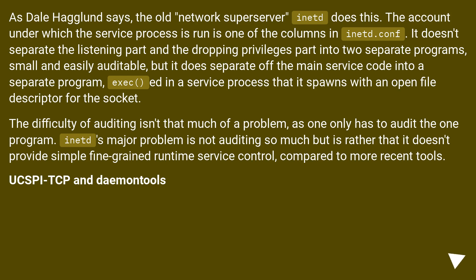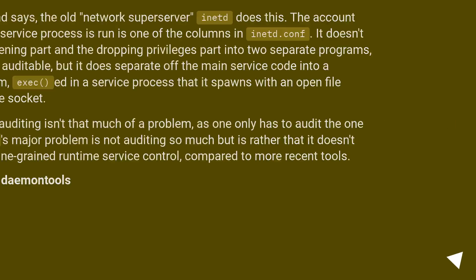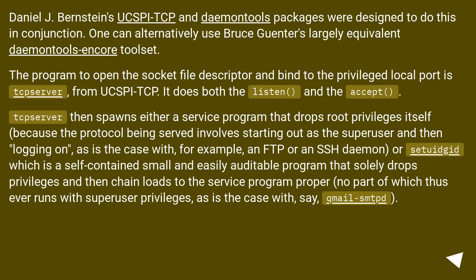Daniel J. Bernstein's UCSPI-TCP and DaemonTools packages were designed to do this in conjunction. One can alternatively use Bruce Gunter's largely equivalent DaemonTools Encore toolset. The program to open the socket file descriptor and bind to the privileged local port is tcpserver from UCSPI-TCP — it does both the listen and the accept. tcpserver then spawns either a service program that drops root privileges itself (as with FTP or SSH daemon), or setuidgid, which is a small, easily auditable program that solely drops privileges and then chain-loads to the service program proper, as is the case with, say, Knile's sntpd.